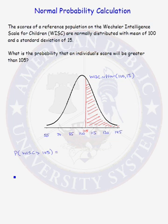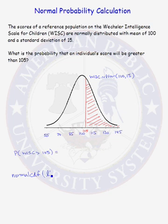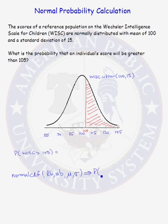How do we use the calculator to find this probability? There is a function on the calculator called normalCDF. This function calculates the area under a normal curve. The parameters you must give it are a lower bound and upper bound — that's where you want the area calculated. You also need to give the mean and standard deviation of the particular normal random variable you're working with. It returns the probability that a normal(mu, sigma) random variable is between the lower bound and upper bound.